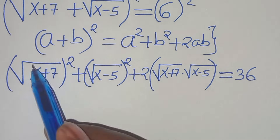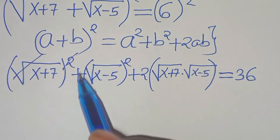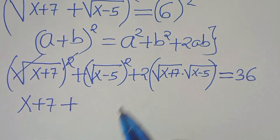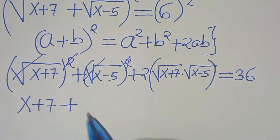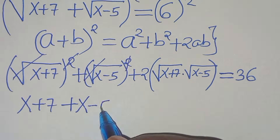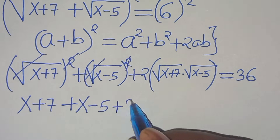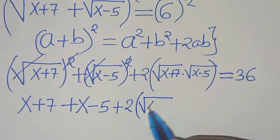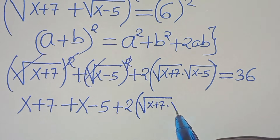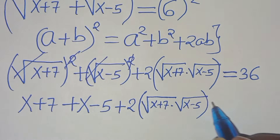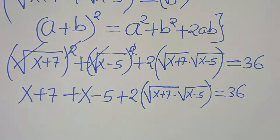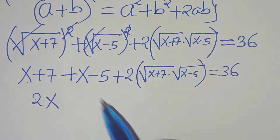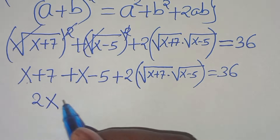The next step is to eliminate the square root signs. So we have x plus 7, plus x minus 5, plus 2 times the square root of (x plus 7) multiplied by (x minus 5), equal to 36. This gives us 2x, with 7 minus 5 equal to plus 2.